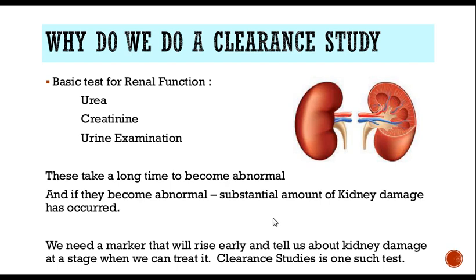Now why do we need to do clearance studies? When we do the basic tests for assessing renal function — urea, creatinine, and urine routine examination are the most common tests done for evaluating kidney function — but there may be a long time before these tests become abnormal. That is, the kidneys are getting damaged and their function is becoming low, but it will take a long time for the urea or creatinine to increase, and by the time they increase, a significant amount of kidney damage has occurred.